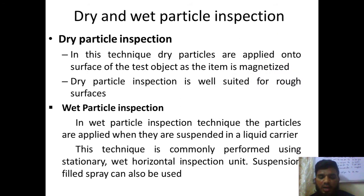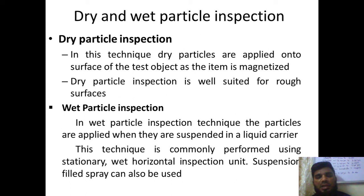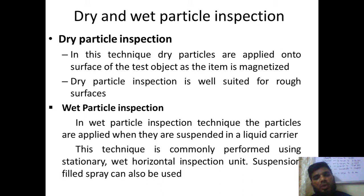In dry particle inspection, the magnetic powders will be in a dry form, not mixed with any kind of liquid — purely dry particles just like a powder. These are applied on the surface after the material is magnetized. Dry particle inspection is generally used for rough surfaces. The extra powder which has been spread on the material can be easily blown off by using blowers to remove the extra particles. Whereas in wet particle inspection, the liquid cannot be removed as easily — the extra liquid will remain on the surface.